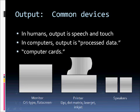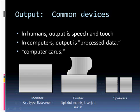In humans, output is speech, touch, and all the ways that we acknowledge received input. In computers, output is basically processed data — so it's information. Computers normally take your input, shunt it through a component called the computer card, and — especially for devices like monitors and speakers — turn the noughts and ones into things that we can understand, like sound.